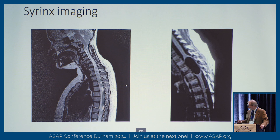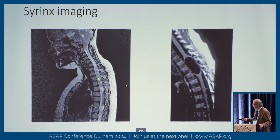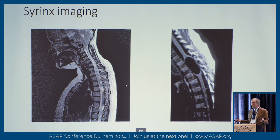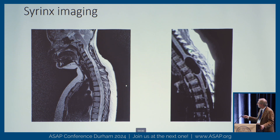Looking at imaging: on the left is a Chiari with a holocord syrinx — a T2-weighted image where fluid space is white, with some flow-related dark spaces. In this area the spinal cord is expanded, completely occupying the spinal canal with no space around it — a very large holocord syrinx. On the right is a T1-weighted image where spinal fluid is dark. It looks like a snake that swallowed something — a focal area where you see the enlargement and thinning of the cord, because you're blowing up a water balloon in the middle of it.